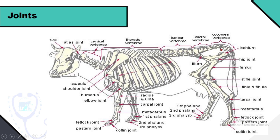In the hind limb: the hip joint between os coxae and femur bone; the stifle joint between femur and tibia-fibula bone; the patellar joint between femur and patella bone; the tarsal joint between the small tarsal bones. Similarly, the fetlock joint, the pastern joint, and the coffin joint.